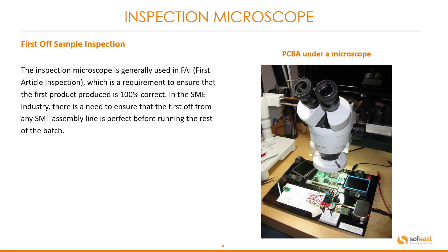First off, sample inspection: the inspection microscope is generally used in first article inspection, or FAI, which is required to ensure that the first product produced is 100% correct. In the SMT industry, there is a need to ensure that the first board off any SMT assembly line is perfect before running the rest of the batch.